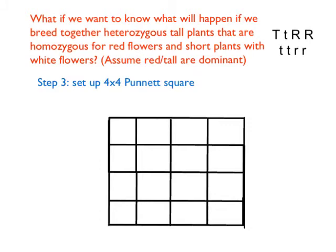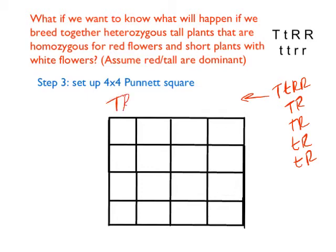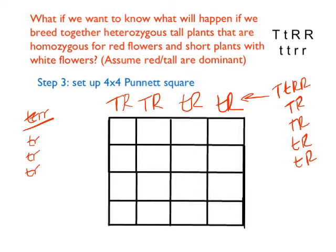Once we know our four gamete possibilities, we need to set those up on our Punnett square. For parent one, TtRR, the four possibilities were big T big R, big T big R, little t big R, and little t big R. Just like we did with single-gene crosses, we put those across the top of our Punnett square. Each column will have two letters at the top — one for the T gene and one for the R gene. You would never put two T's or two R's in the same column. For parent two, all four possibilities were little t, little r, so those go along the side rows.